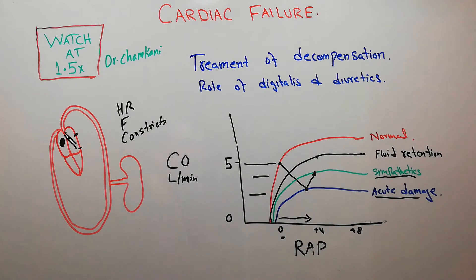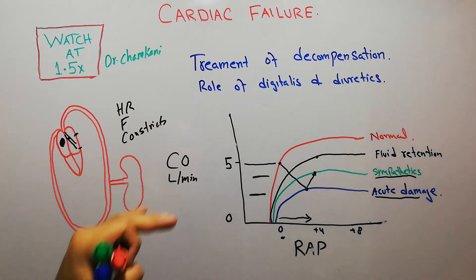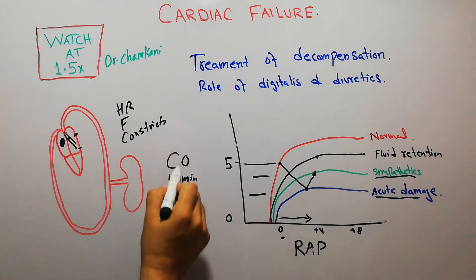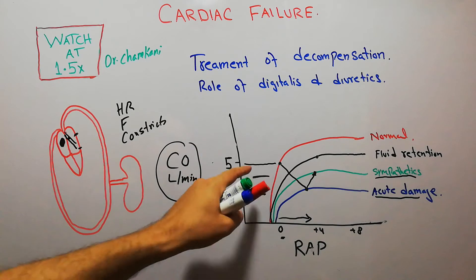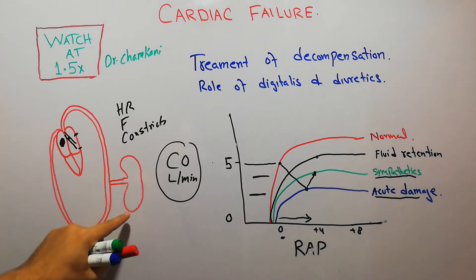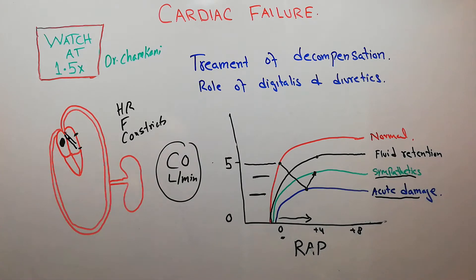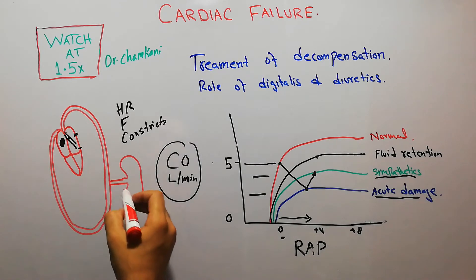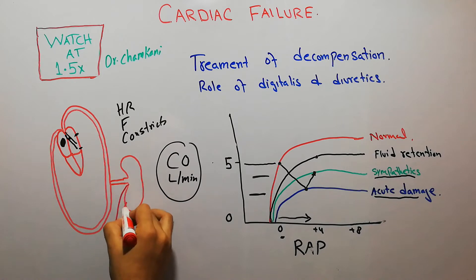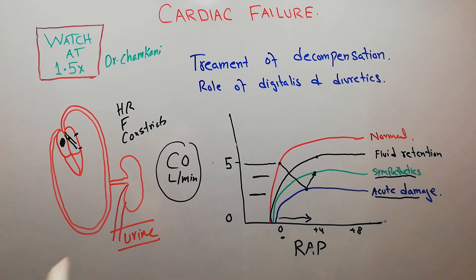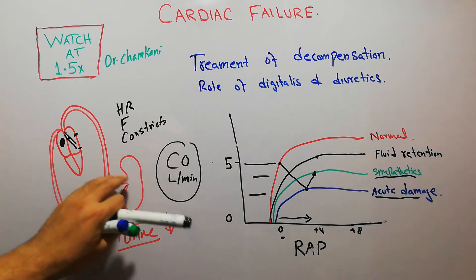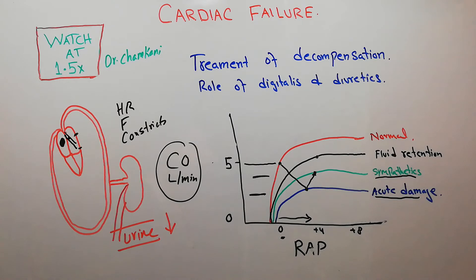After some time, the chronic effects of cardiac failure begin. Because cardiac output is below normal, the kidneys are not receiving sufficient blood. As a result, the amount of urine the kidneys form every hour decreases. The patient can go into anuria and the kidneys start retaining fluid, keeping more fluid in the body.